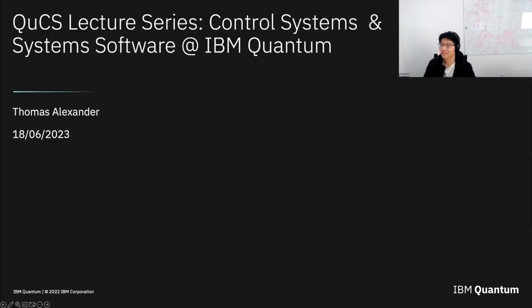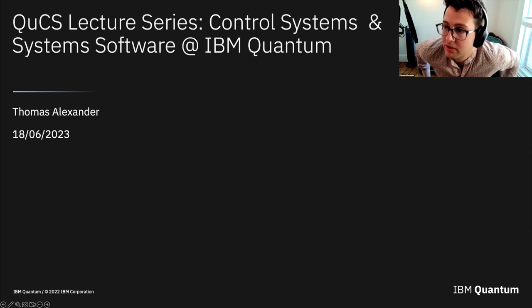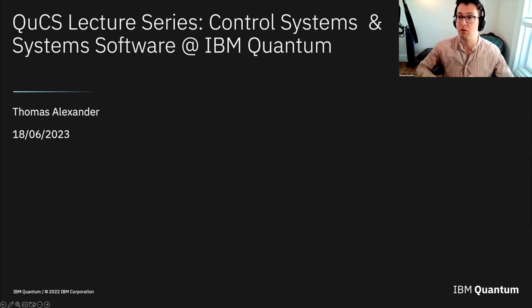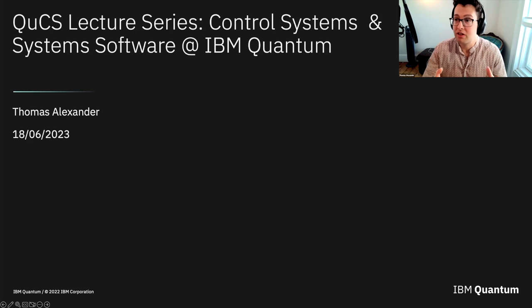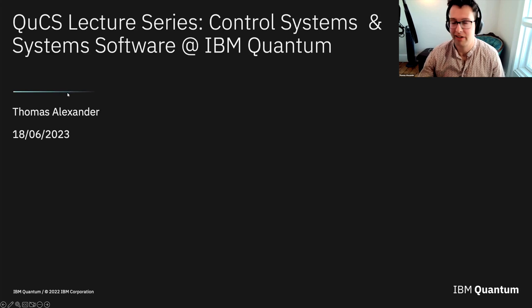Today I'm going to be speaking about our control systems at IBM, as well as our system software that orchestrates these control systems. I'm giving an overview of the layer that is often hidden from the end user. We think a lot about programming in Qiskit and about the qubit chips, and we've all seen the pictures of the big dilution refrigerators, but these are in a sense passive devices. It's the software and complex control systems and computer architecture that makes it all work.